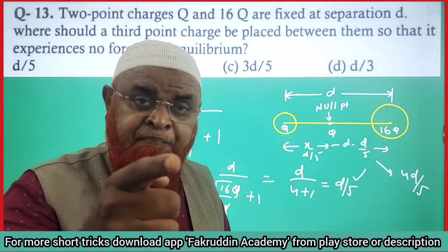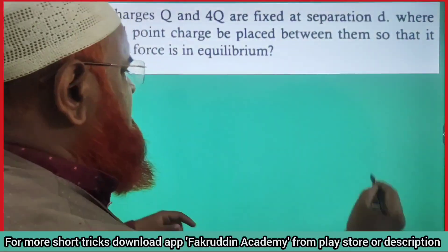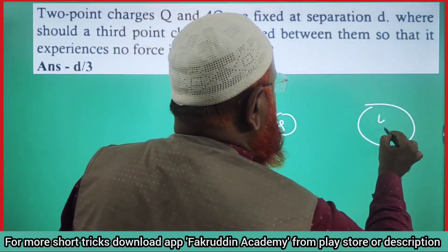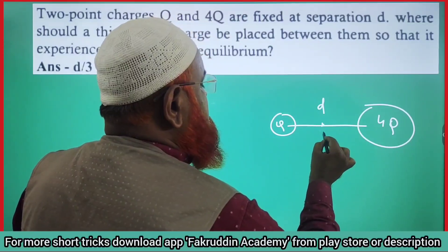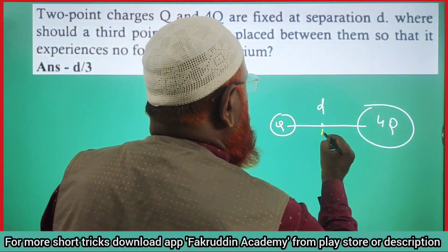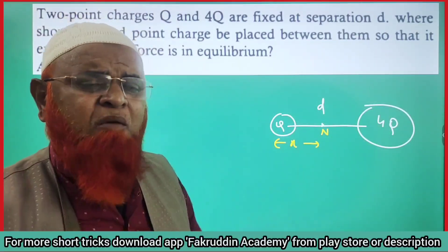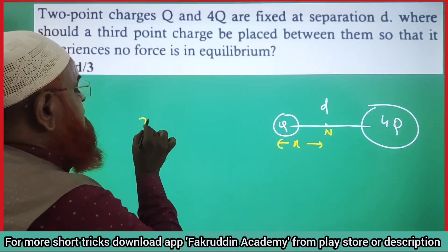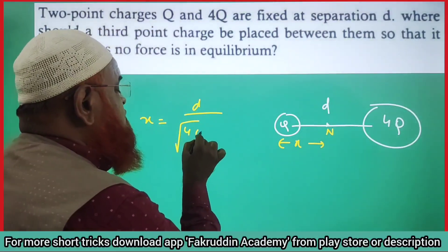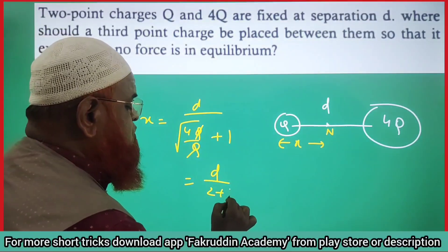If you want one more problem — one more problem is ready. Consider charges Q and 4Q. This is Q and this is 4Q, and the distance between them is D. You have to find out the distance X of the neutral point from the smaller charge. Using the same formula: X equals D divided by square root of Q2 by Q1 plus 1. Q2 is 4Q, Q1 is Q. The Q's get cancelled. Square root of 4 is 2, plus 1 gives 3. So the answer is D by 3.